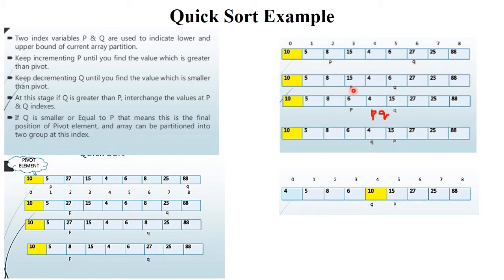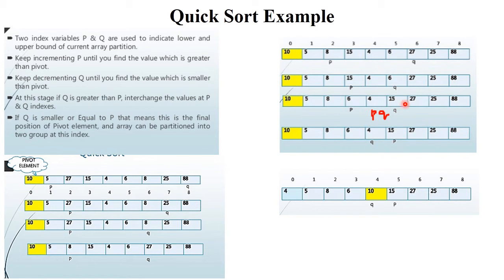Check P again: is it smaller than 10? Condition false. Check Q: is it greater than 10? Condition false. Both conditions are false, so perform swapping again — 15 moves to P's position and 6 moves to Q's position. Now check: 6 is smaller than pivot 10 — condition true, move forward. 15 is greater than 10 — condition true, move forward. Now P and Q both point to the same element or same location.